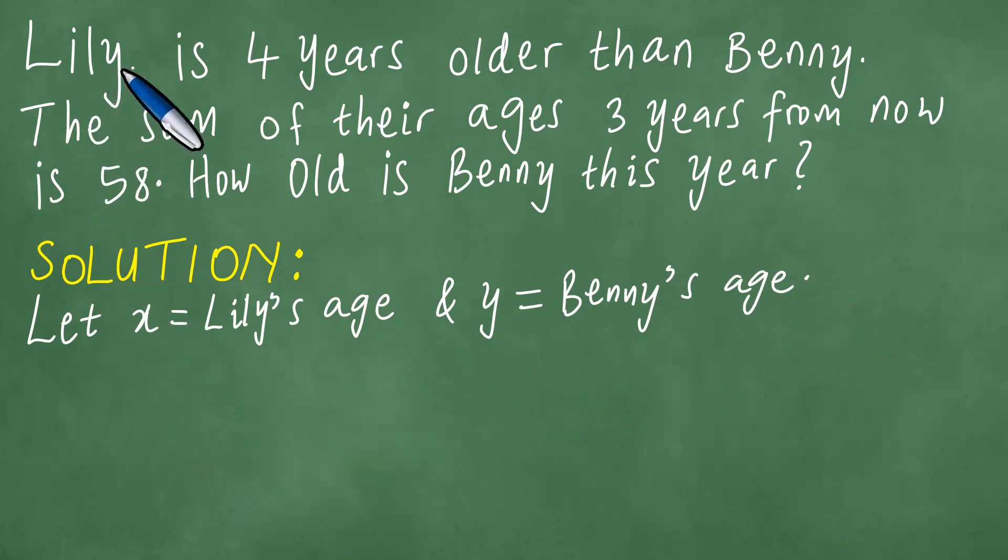Right, but you understand that Lily is four years older than Bernie, meaning therefore that x minus y is actually equal to four. And so these can be written alternatively as, if we make x a subject of the equation, getting x equals y plus four.